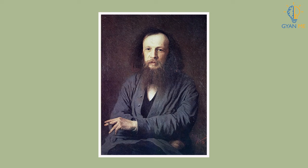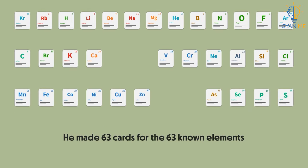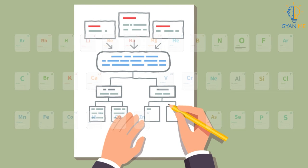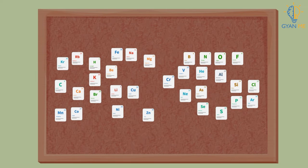To simplify what Mendeleev did, he made 63 cards for 63 known elements. He wrote all that he knew about each element on these cards and hung them on the board.